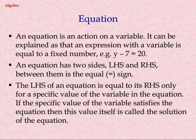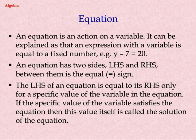Equation. An equation is a condition on a variable. It can be explained as an expression with a variable equal to a fixed number, for example Y plus 7 equals 20. An equation has two sides: LHS and RHS, with an equal sign between them. The LHS of an equation equals its RHS only for a specific value of the variable. If a specific value of the variable satisfies the equation, then that value is called the solution of the equation.